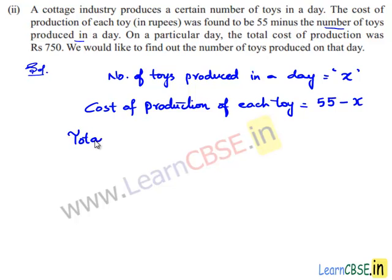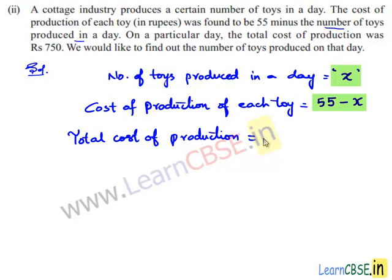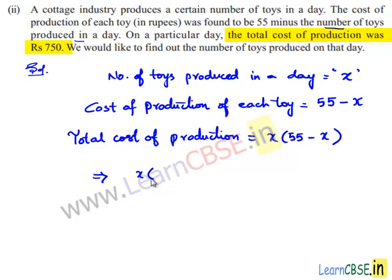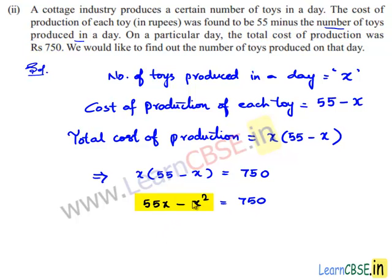Total cost of production is number of toys multiplied by cost per toy, so total cost becomes x times (55 minus x). According to the given problem, total cost equals 750 rupees, so x times (55 minus x) equals 750. On multiplying, 55x minus x squared equals 750. Transposing to the left hand side gives x squared minus 55x plus 750 equals 0.